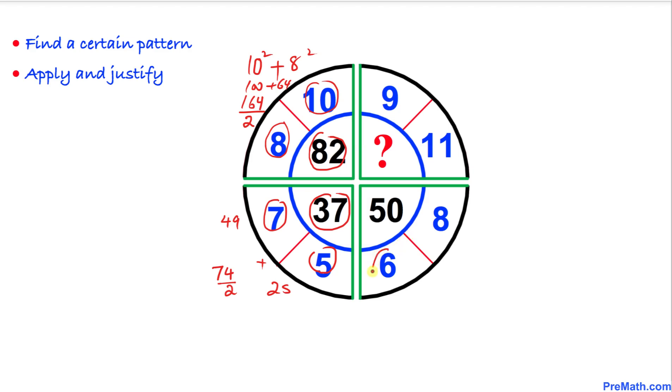And now let's move on to our fourth quadrant. Over here 6 square is going to give us 36 plus 8 square is going to give us 64. If we add these two numbers we are going to get 100 and then divide it by 2. So we are going to get 50.